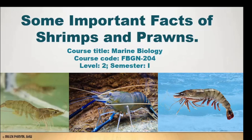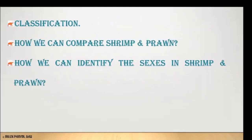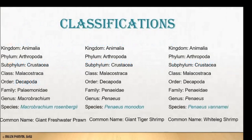Hello students, today we are going to learn about some important facts of shrimps and prawns. For today's class I wanted to describe two shrimp species and one prawn species: Penaeus vannamei (white leg shrimp), Penaeus monodon (giant tiger shrimp), and Macrobrachium rosenbergii (giant freshwater prawn). The topics included here are: classification of the three species, how we can compare shrimp and prawn, and how we can identify the sexes in shrimp and prawn.